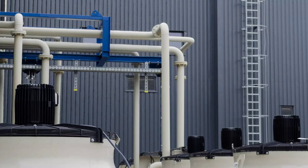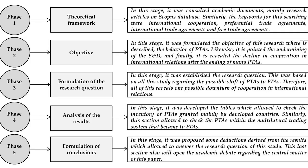GATT aimed to reduce trade barriers and promote fair and open trade among nations. Over the next few decades, GATT evolved and expanded its scope, addressing issues such as agriculture, textiles, and intellectual property rights. However, as global trade became more complex, it became evident that a more comprehensive and enforceable framework was needed.